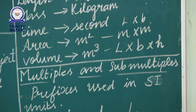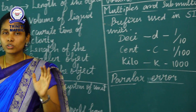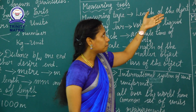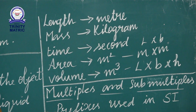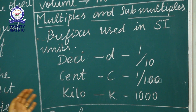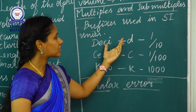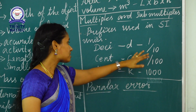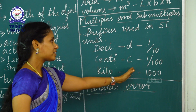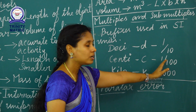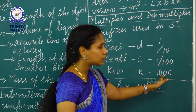Next topic: multiples and submultiples. Prefixes used in SI units. The basic SI units are meter, kilogram, and second. Prefix letter D — submultiples value 1 by 10. Centi — prefix letter C — submultiples value 1 by 100. Kilo — prefix letter K — multiples value 1000.